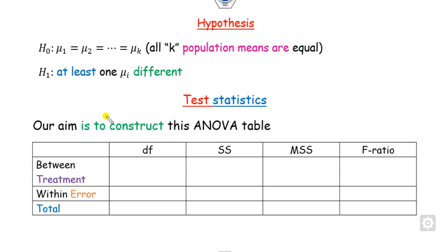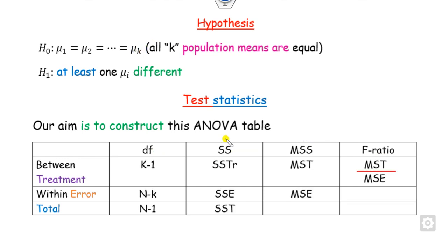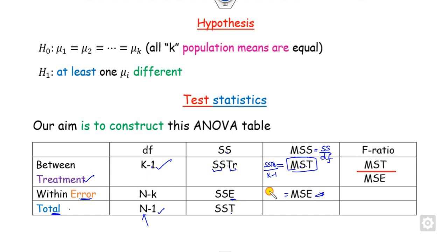The test statistic involves completing the ANOVA table. Degree of freedom, sum of squares (SS), mean sum of squares (MSS), and the F ratio are the components. If you have K samples, degree of freedom is K minus 1. Total degree of freedom is N minus 1. F ratio is MSS treatment divided by MSS error. MSS is calculated as SS divided by its degree of freedom.